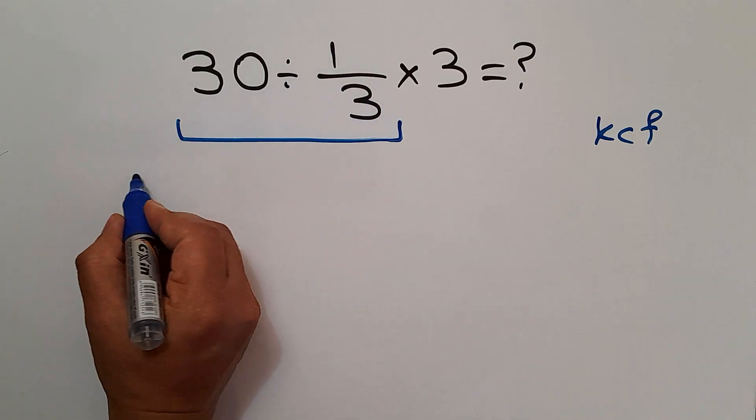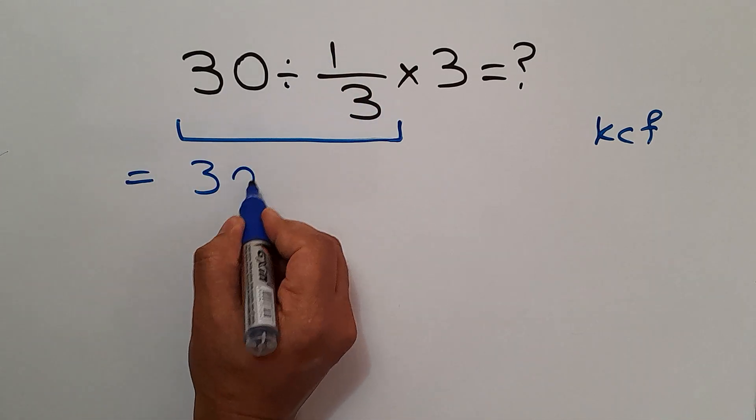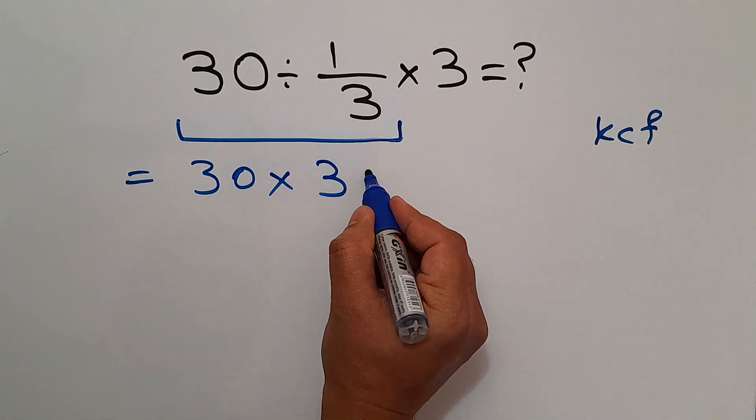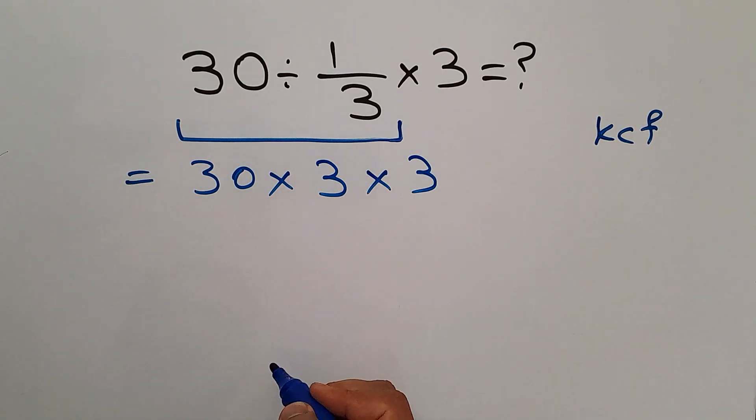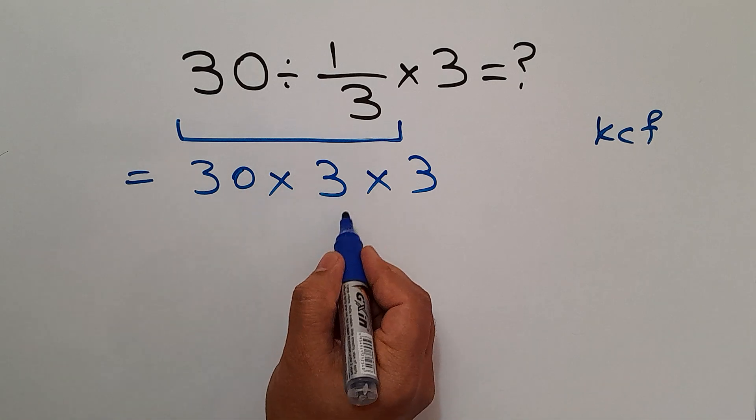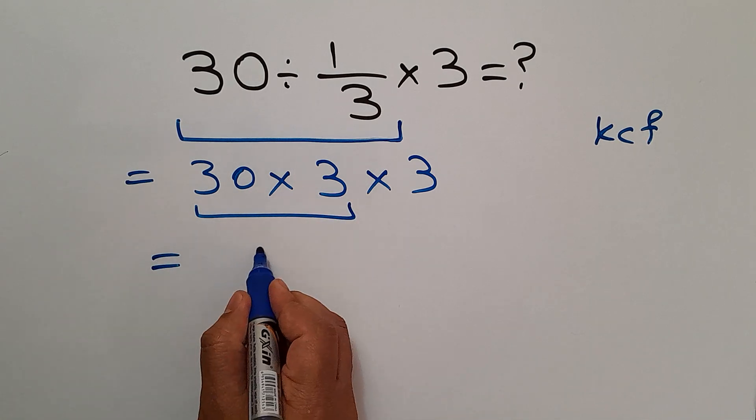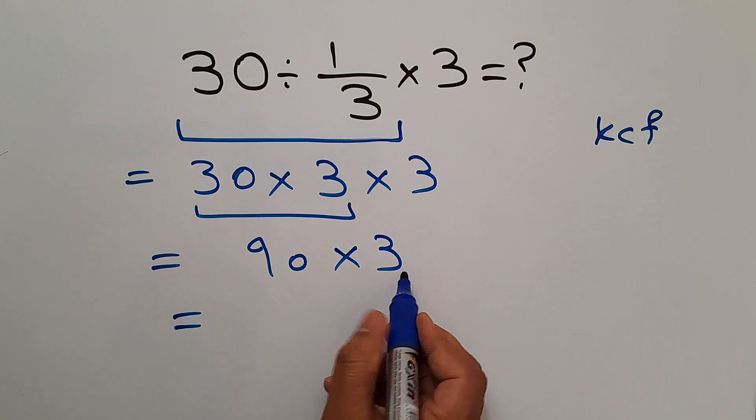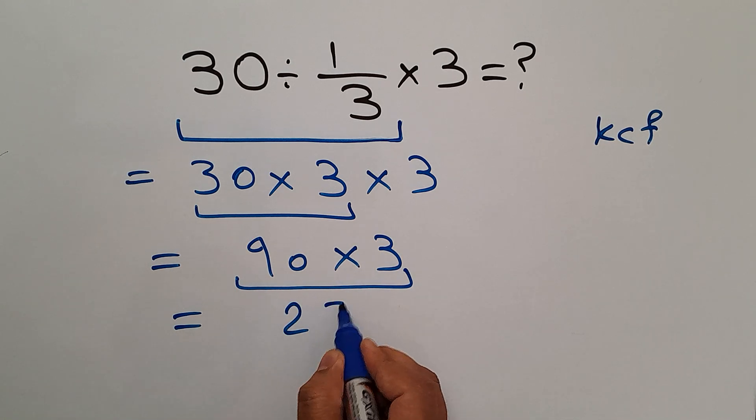So, we can write 30 times just 3 and times 3. 30 times 3 gives us 90 and 90 times 3, which equals 270.